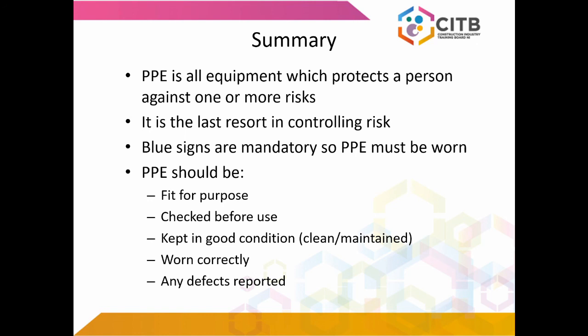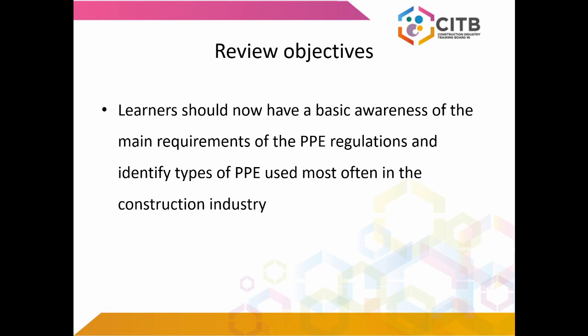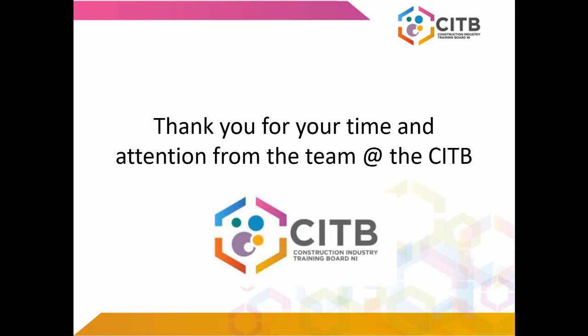To summarize: PPE is all equipment which protects a person against one or more risks. It is the last resort in controlling risk. Blue signs are mandatory so PPE must be worn. PPE should be fit for purpose, checked before use, kept in good condition, cleaned and maintained, worn correctly, and any defects reported. Learners should now have a basic awareness of the main requirements of the PPE regulations and identify types of PPE used most often in the construction industry. Thank you for your time and attention from the team at the CITB. A more comprehensive course on personal protective equipment is available for booking on site or with the mobile training unit — please contact the CITB NI office for further information.